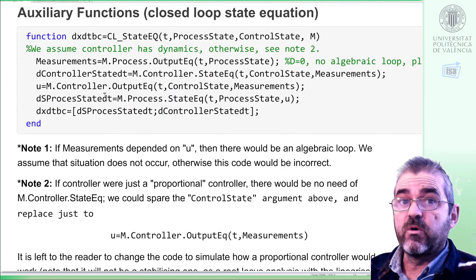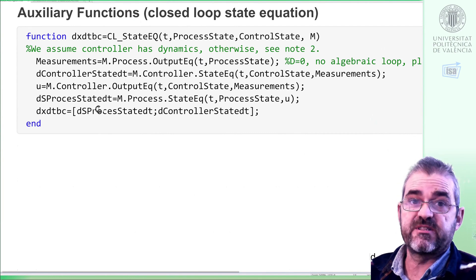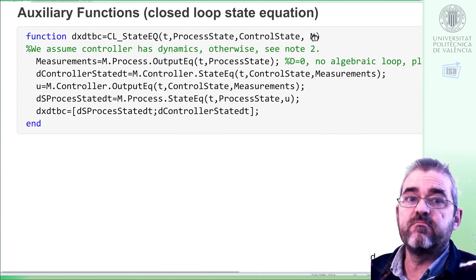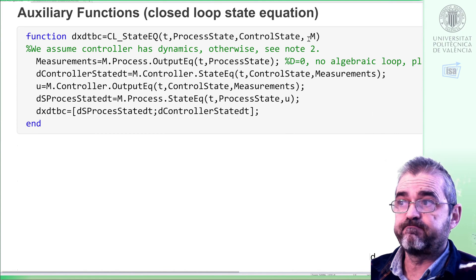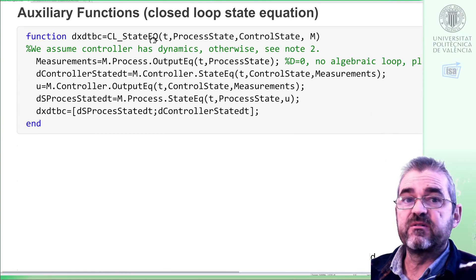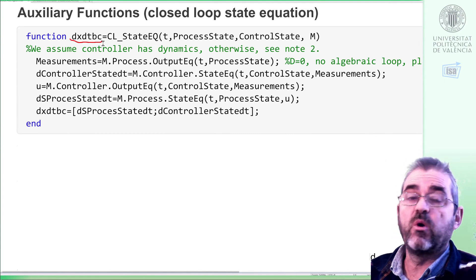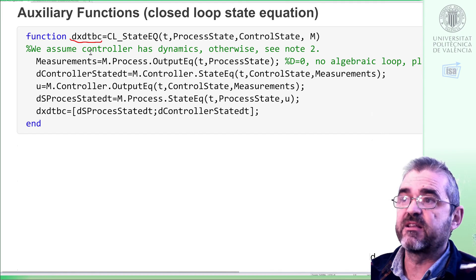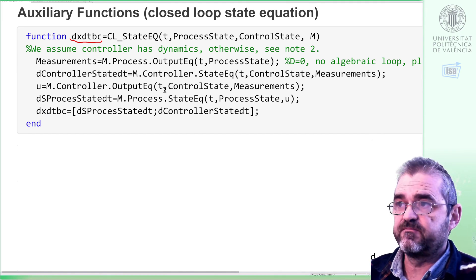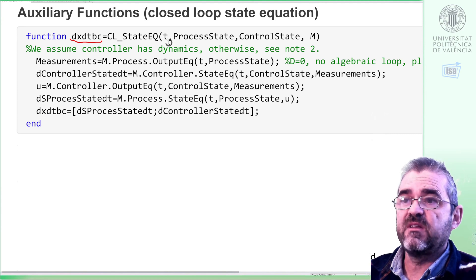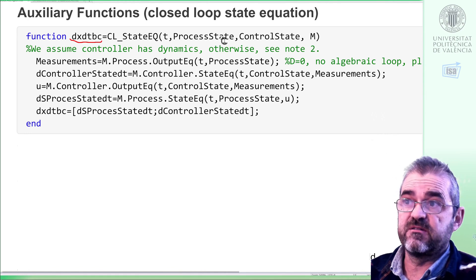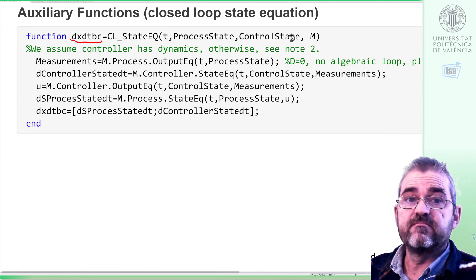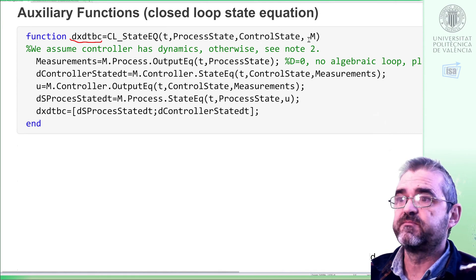Let us now analyze the core of this video, which is how to build the closed-loop state equations. We have in the model M the open-loop state and output equations of the plant and the controller. We will define a function, closed-loop state equation, whose output will be the derivative of the joint process and control state vector, just stacked vertically. Its inputs will be the clock, the process state—angular position and velocity of the mass in the pendulum—control state, which is associated to the derivative filter, and this M with the model.